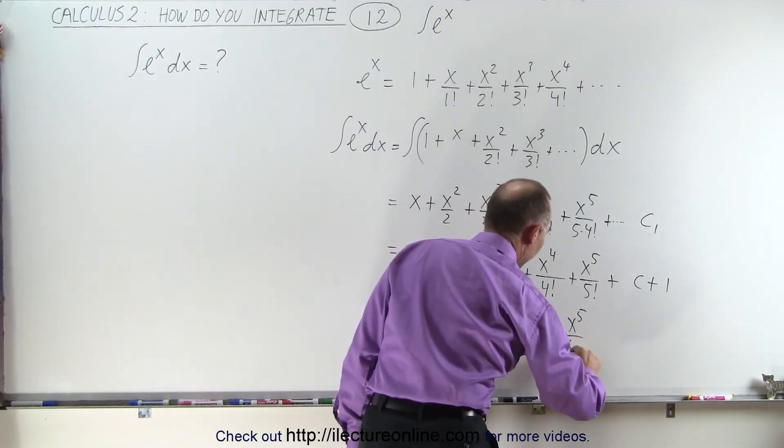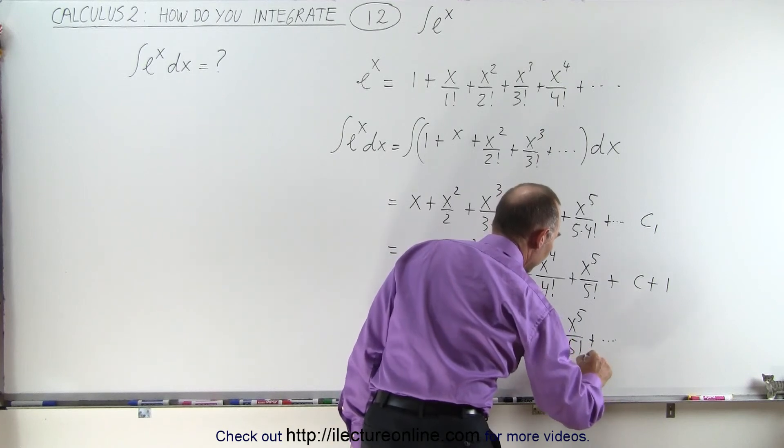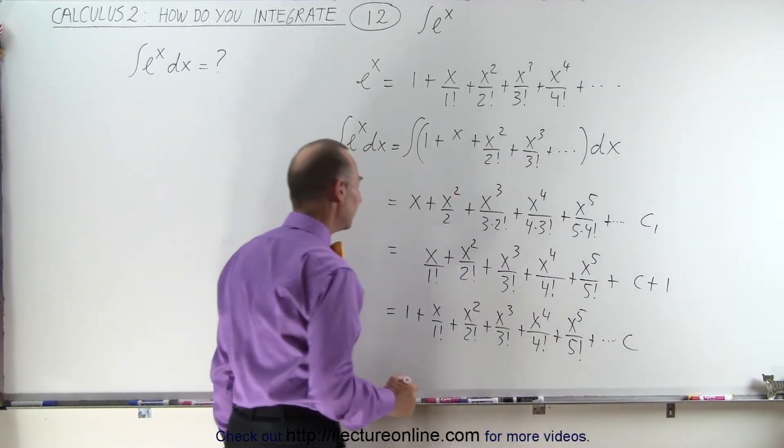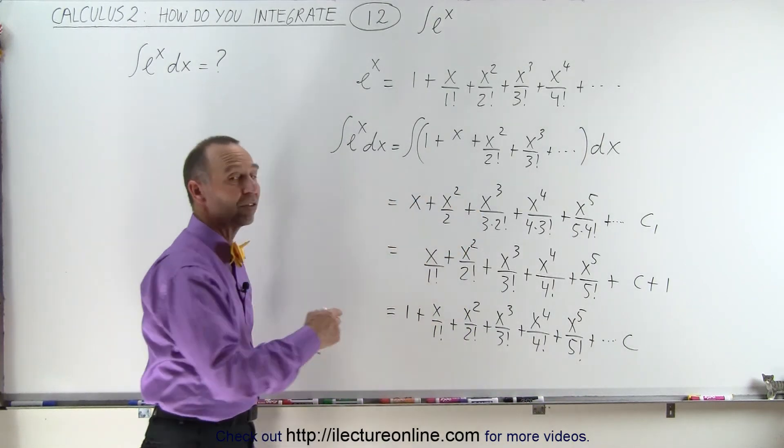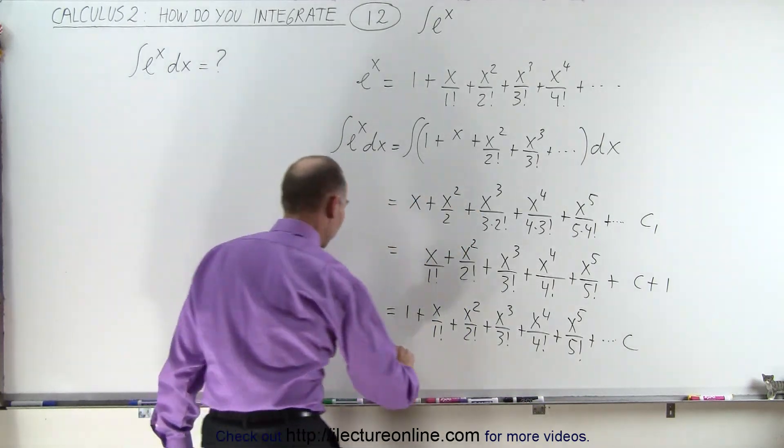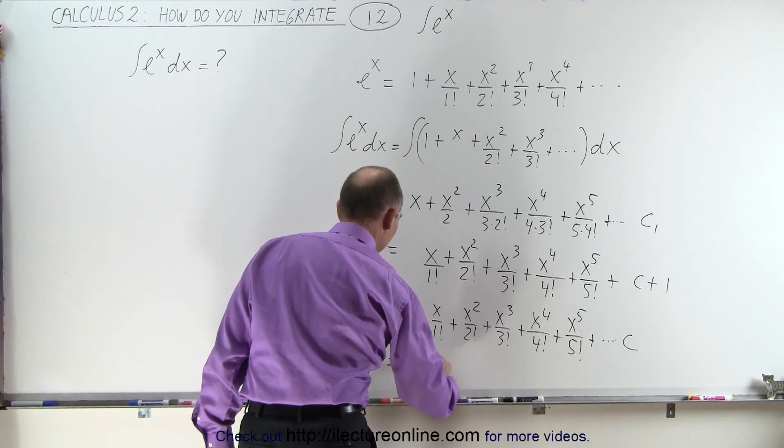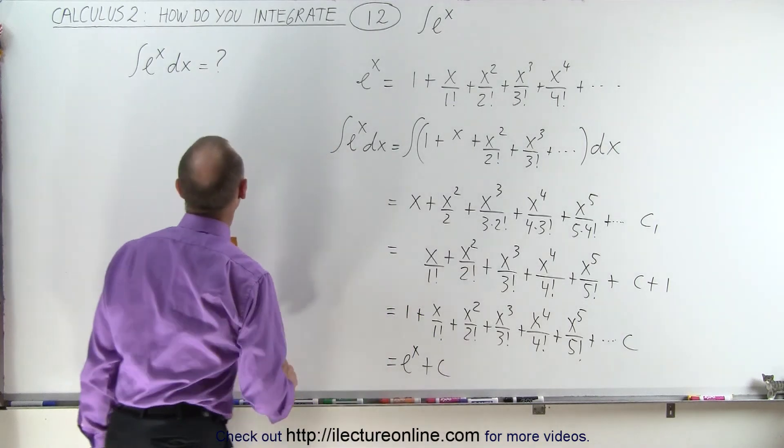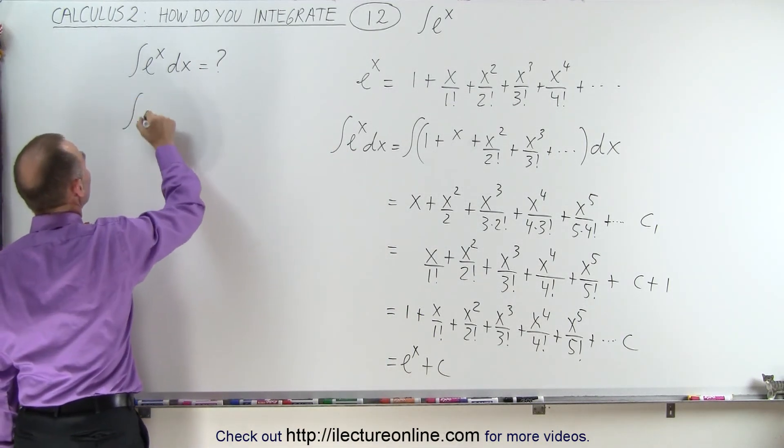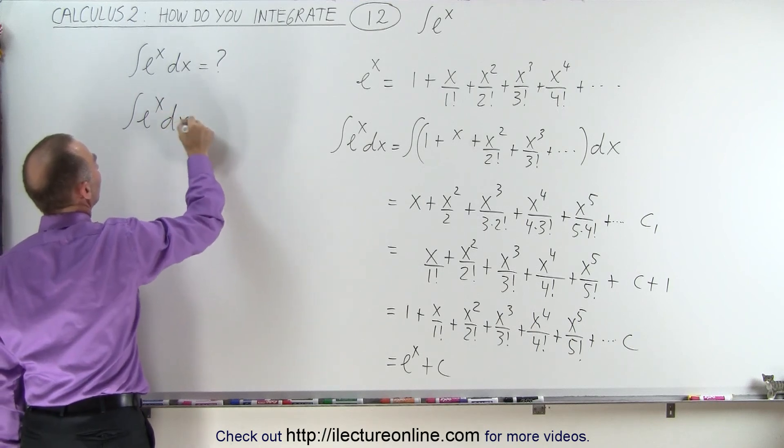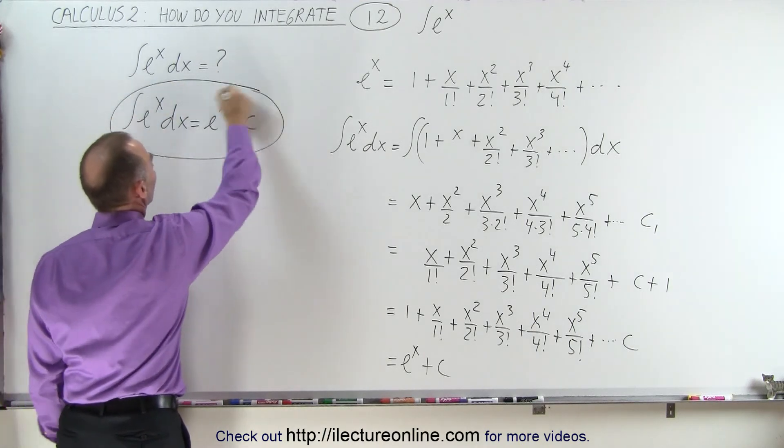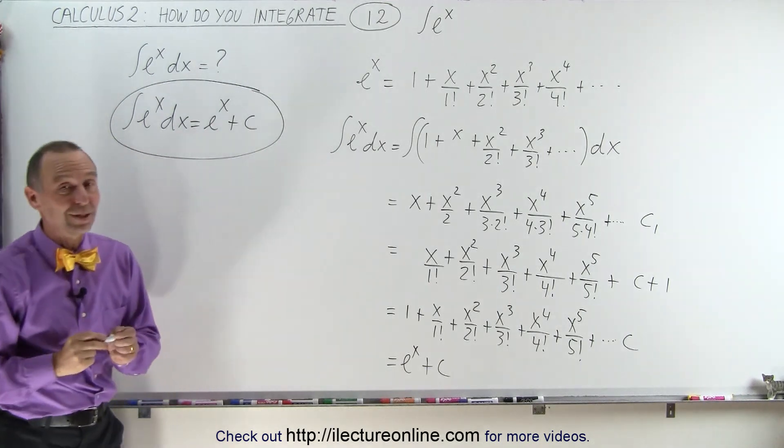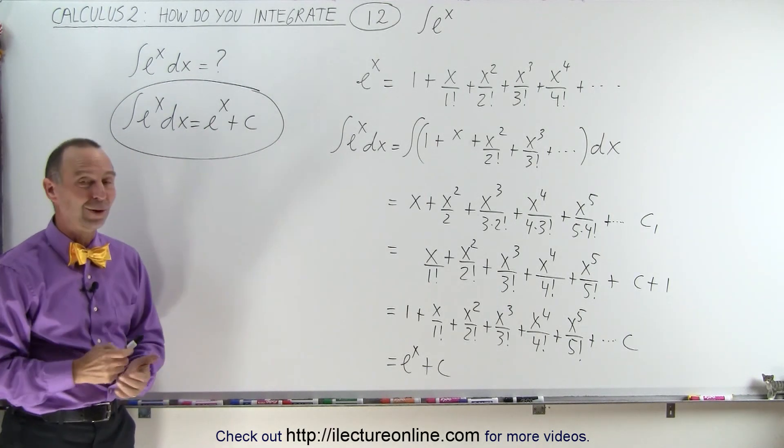...plus x squared over 2 factorial, plus x cubed over 3 factorial, and so forth, plus a constant of integration C. Notice that this is simply the infinite sum of e to the x. So this equals e to the x plus C, which means the integral of e to the x dx is simply e to the x plus C. There we have it. It's indeed true, and that's how it's shown.